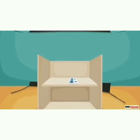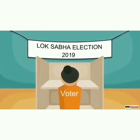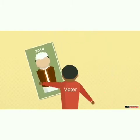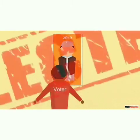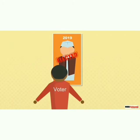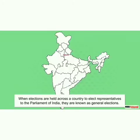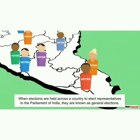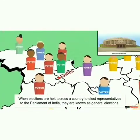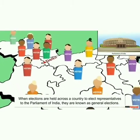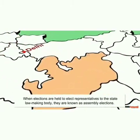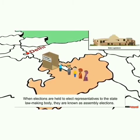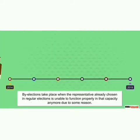Elections are held at regular intervals to select representatives of the people. Through elections, people can also reject the representatives who had been chosen in the previous elections if they are not satisfied with their performances. When elections are held across a country to elect representatives to the Parliament of India, they are known as general elections. When elections are held to elect representatives to the state lawmaking body, they are known as assembly elections.